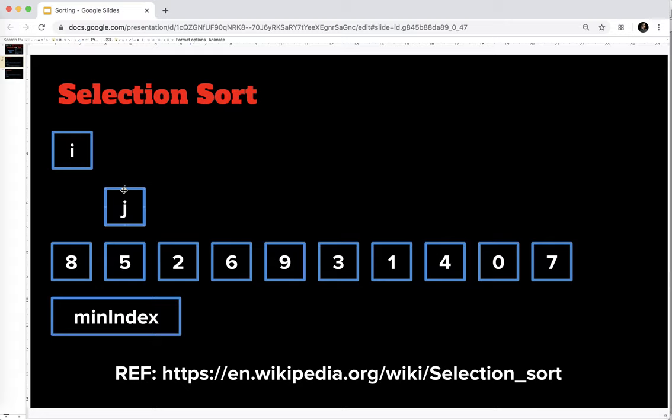So j is always going to be starting at i plus 1. And again, until we get to the end, we find the lowest value. So we also need to keep track of where is the lowest value that we've found so far. So for example, when we do our first run-through, we assume that the first value, in this case the 0th value, is the lowest. So our minimum index is going to be 0. And that 0 comes from i. So we're just going to set minimum index equal to i.